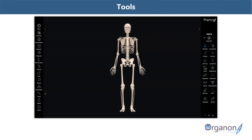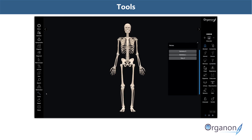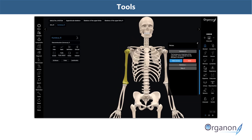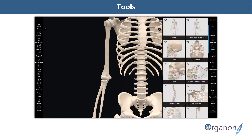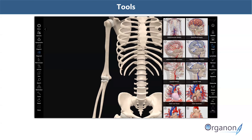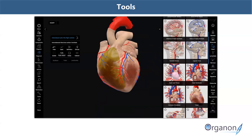3D Organon anatomy provides a range of tools for patient education, surgical training, creating lesson plans, anatomy demonstrations or presentations on desktop, tablet or mobile. In the tools section, click on the notes icon and click on one of your notes to read the text you have already added. Click on the blue 'select structure' icon and the anatomical structure you made a note on will appear.